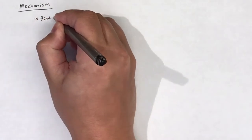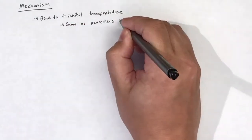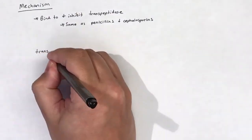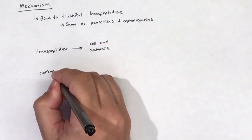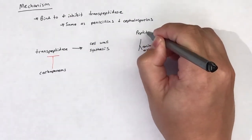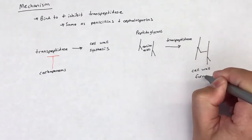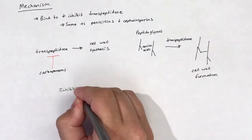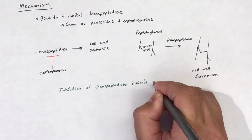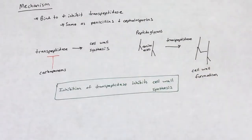Carbapenems work in a very similar fashion to the penicillins and cephalosporins. Like the penicillins and cephalosporins, carbapenems work by binding to and inhibiting transpeptidase. Transpeptidase is essential in the formation of the crosslinks that make up the bacterial cell wall. Lack of crosslinking leads to a lack of cell wall rigidity and bacterial cell death. Ultimately, inhibition of transpeptidase inhibits cell wall synthesis.